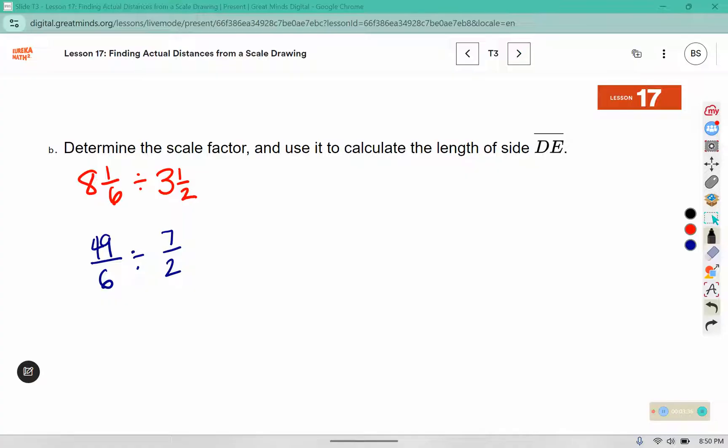And then I'm going to use the leave, change, flip. I know that 49 and 7 both have a factor of 7. 7 times 7 is 49 and 7 times 1 is 7.